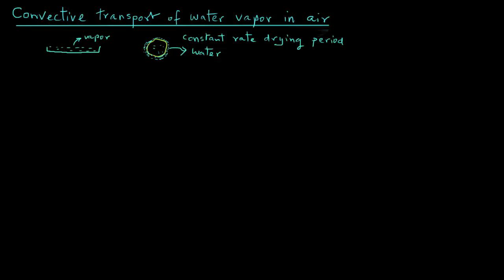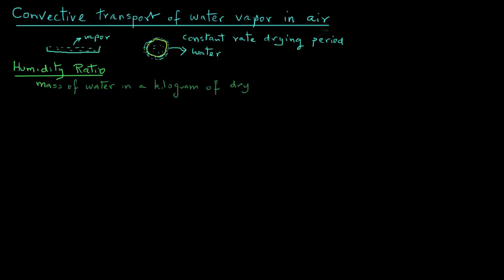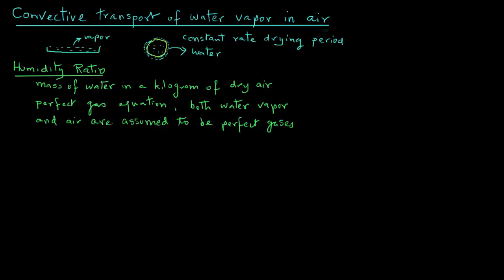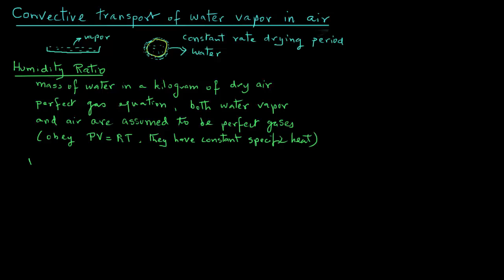To develop the mathematical expressions for this case, let's begin with the humidity ratio, a term from psychrometric properties. The humidity ratio is the mass of water per kilogram of dry air. We will assume that both water vapor and air are perfect gases, obeying PV = RT with constant specific heats. The symbol we use for humidity ratio is W.